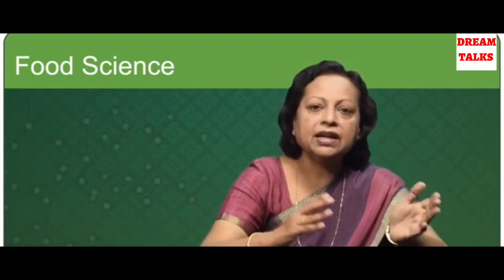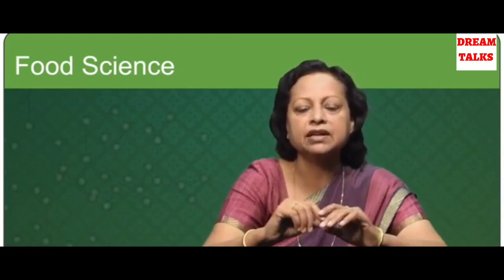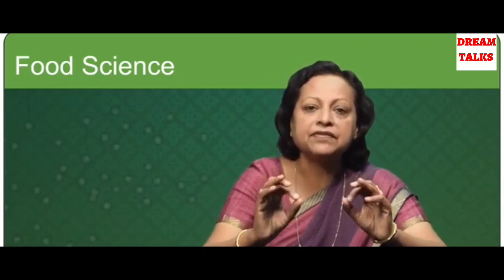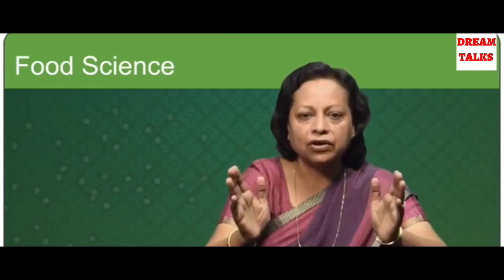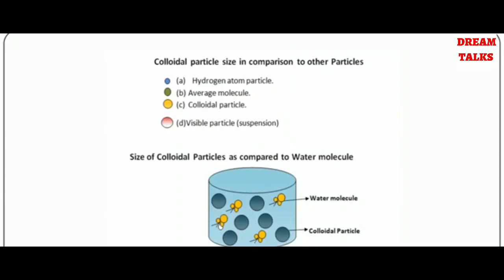Colloidal chemistry deals with dispersed systems of a definite size, because it is the size of the particle in the colloidal range that imparts specific characteristic properties not explained by the laws governing solid, liquid or gaseous states of matter. A diagram shows the size of colloidal particles compared to a water molecule. We can see that colloidal particles are bigger than the water molecule, and also bigger than hydrogen atoms and average molecules, but only smaller than visible particles which form suspensions.